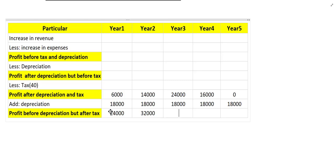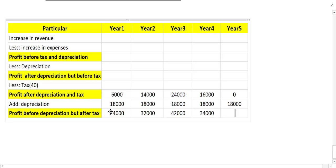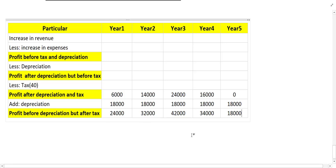Now we add depreciation back to the profit figures. Adding 18,000 to year one gives 24,000. Adding 18,000 to year two gives 32,000. Adding 18,000 to year three gives 42,000. For year four it becomes 34,000. And for the last year, adding 18,000 gives the final inflow amount. This is essentially the cash inflow of the project for each year.